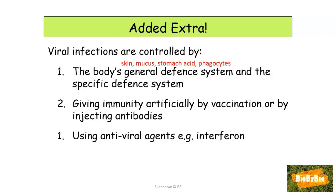Viral infections may also be controlled by our specific defense system, which involves the production of antibodies. They might also be controlled by injection — giving immunity artificially by vaccinating us using a treated form of the disease or its toxins to stimulate the production of antibodies in our own body.